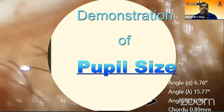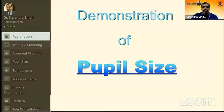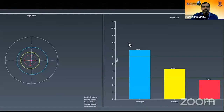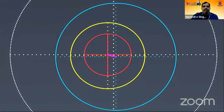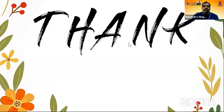Demonstration of Pupil Size. Pupil size is measured in photopic, normal, and scotopic conditions, and pupil center shift is measured. The values are displayed as a bar diagram with maximum and minimum recommended limits for a particular procedure. In the present case, pupil center shift is 0.49 millimeters. Thank you for your time.